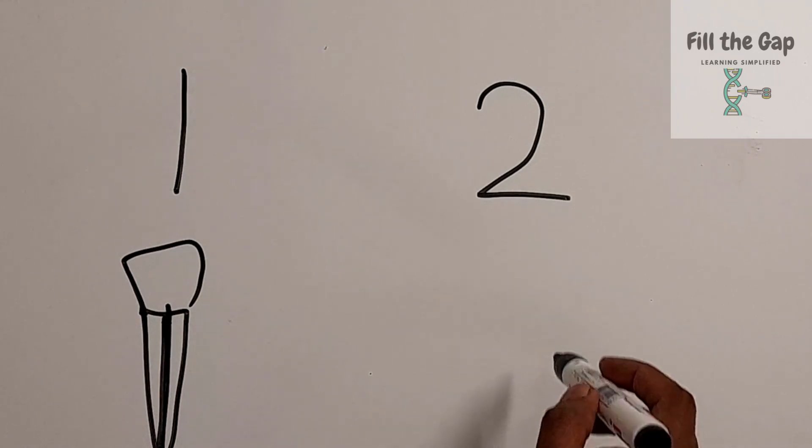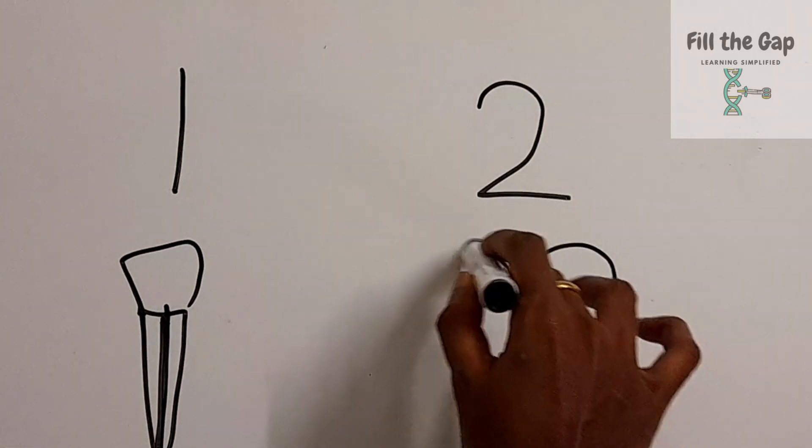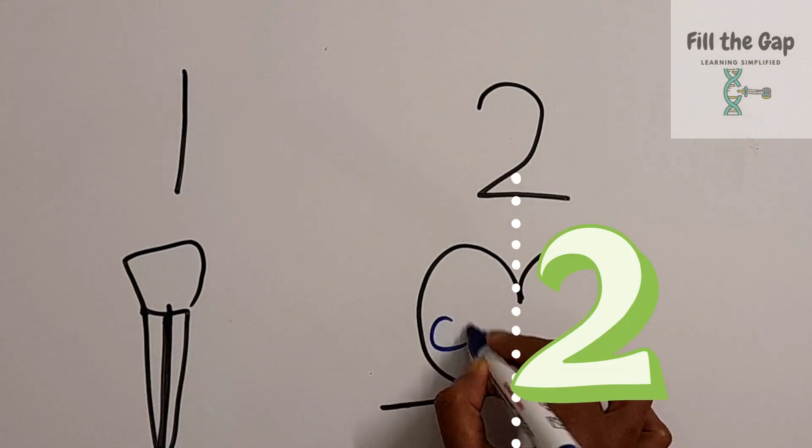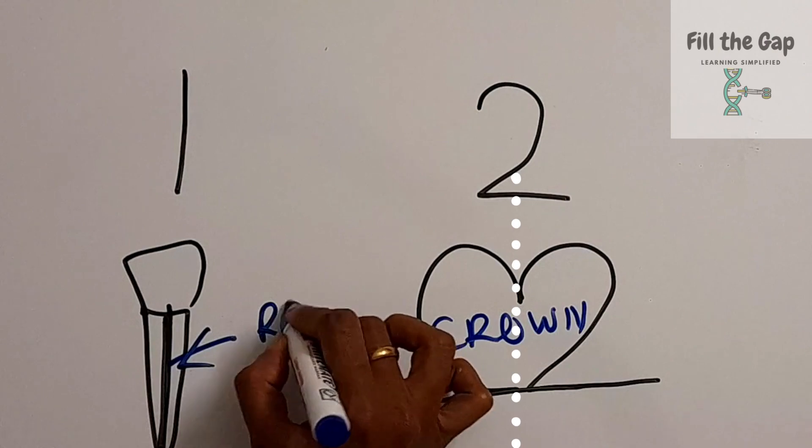It's thin and long just like the number 1, and the number 2 looks like the crown because it's fat and chubby with grooves and cusps. So I've drawn two 2's. One 2 is facing the other 2. It's like a mirror image and it looks like the crown.